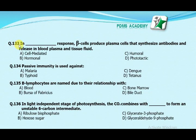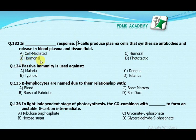In which response do beta cells produce plasma cells that synthesize antibodies and release them in blood plasma and tissue fluid? Option A: cell mediated response. Option B: hormonal response. Option C: humoral immune response. Option D: phototactic response. Our correct answer is C, humoral immune response.